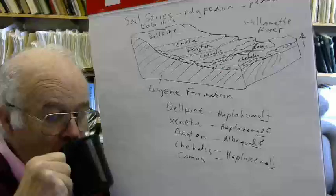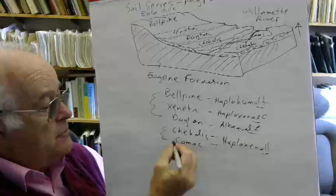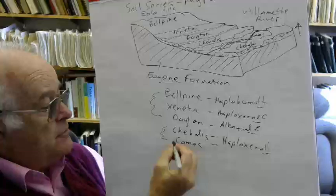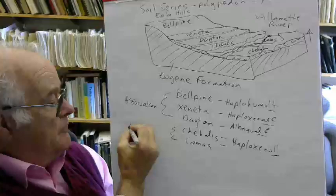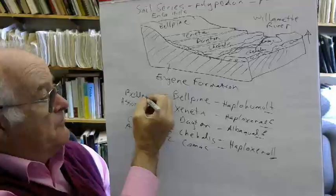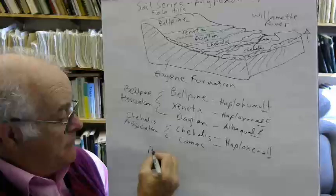There are plenty of Haplohumults elsewhere like in Louisiana, Mississippi, Alabama, Arkansas, but these have different names. The series names are meant to be quite specific to a particular locality. We can also group things together. We can have an association of forest soils and an association of grassland soils. So we can group these into a Chehalis and a Belpine association.